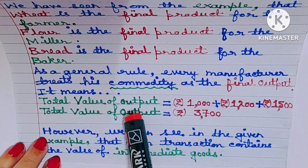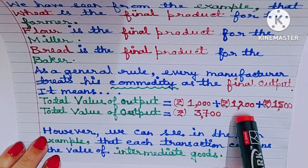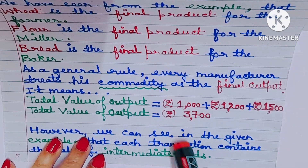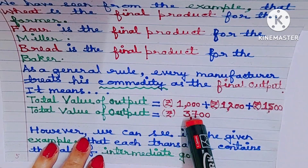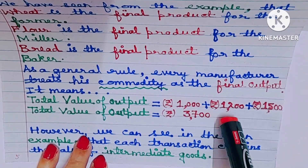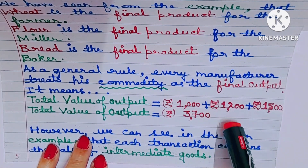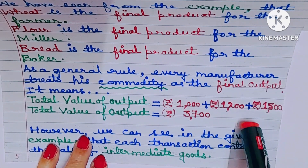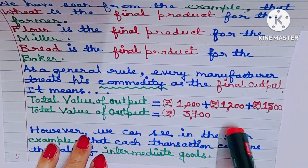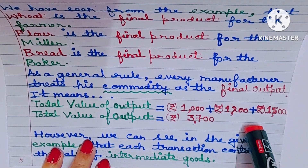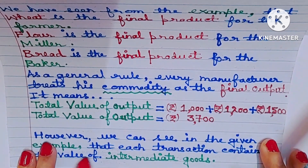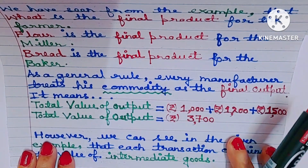Otherwise, if we do not avoid double counting, the total value of output would be Rs. 1000 plus Rs. 1200 plus Rs. 1500, equaling Rs. 3700, because wheat of Rs. 1000 has been counted twice — once as value of output by the farmer, and once as value of input by the miller — and flour of Rs. 1200 has also been counted twice.